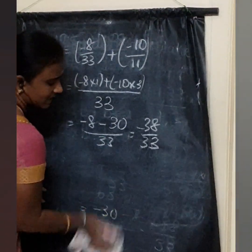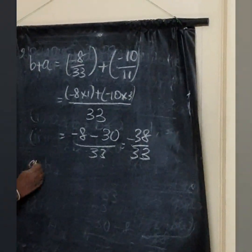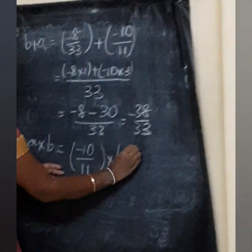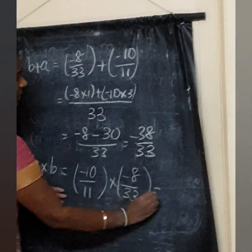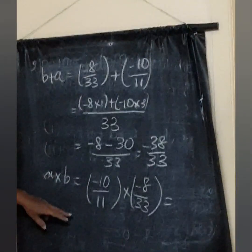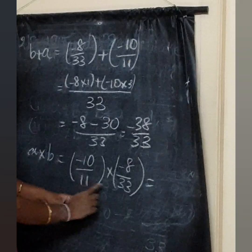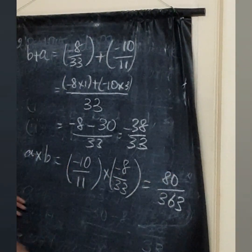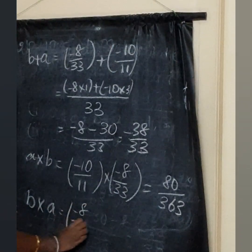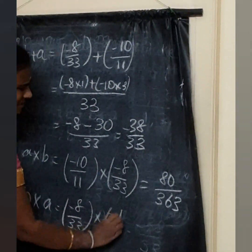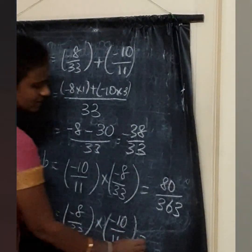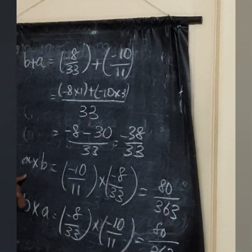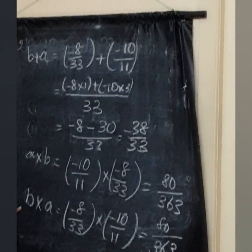Next, multiplication: A into B is minus 10 by 11 into minus 8 by 33. The denominator is 11 into 33 equals 363, and minus into minus gives plus, so 10 times 8 equals 80. A into B equals 80 by 363. B into A is minus 8 by 33 into minus 10 by 11, giving 33 into 11 equals 363 and 8 times 10 equals 80. So B into A also equals 80 by 363.